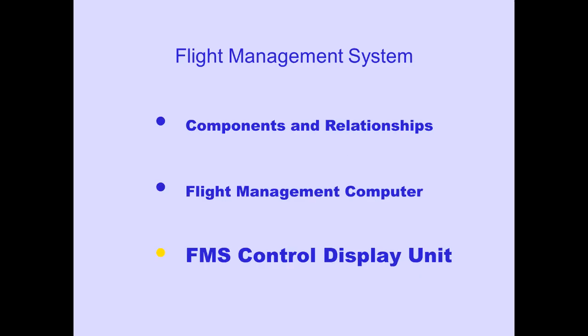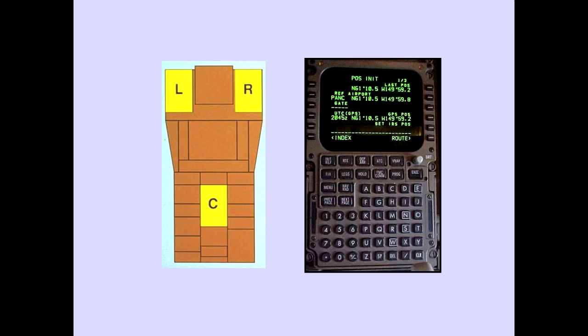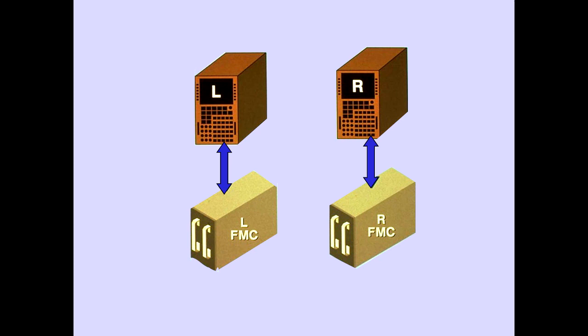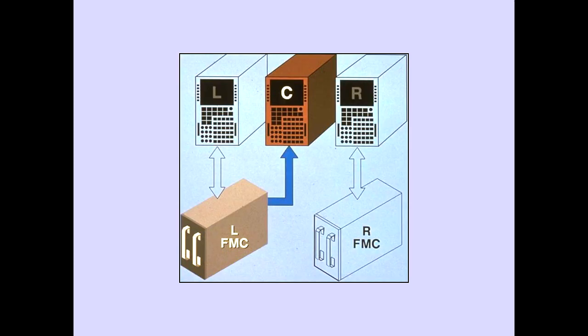Let's now discuss the FMS control display unit, or FMS-CDU. The FMS-CDUs are located on the aisle stand. The left FMS-CDU communicates with the left FMC, and the right FMS-CDU communicates with the right FMC. The center FMS-CDU receives information from the left FMC, but it cannot send information to either FMC.